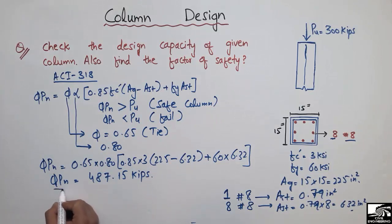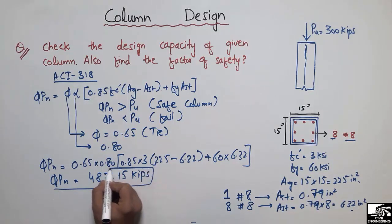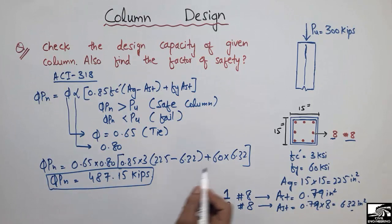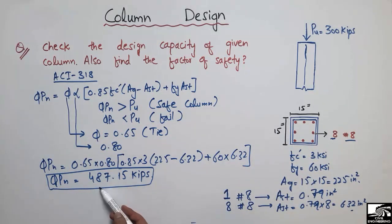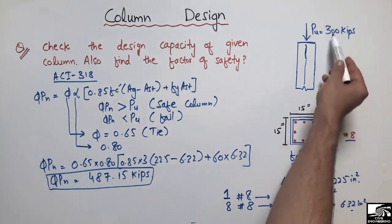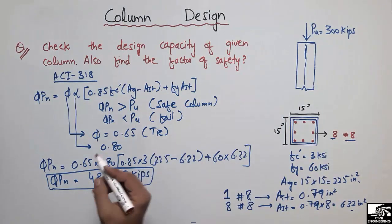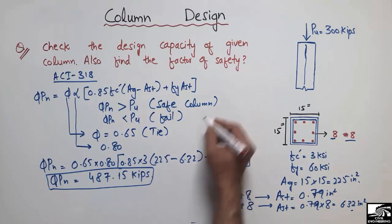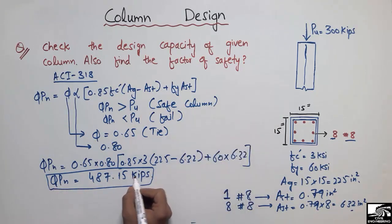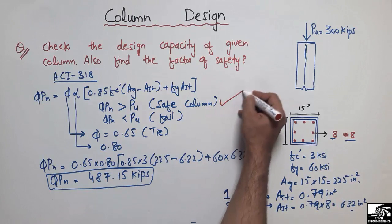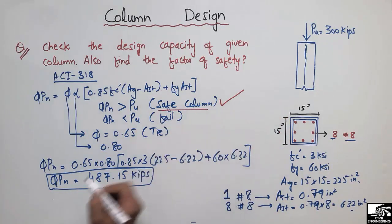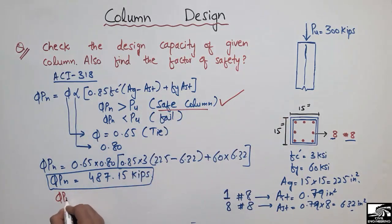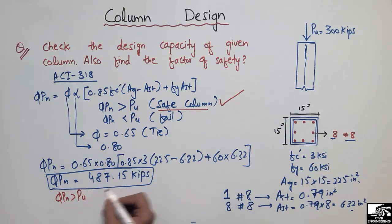φPn = 487.15 kips is the design capacity of this reinforced concrete column. Since φPn (487.15 kips) is greater than Pu (300 kips), the column falls in the safe category — the column is safe and will not fail under this load.